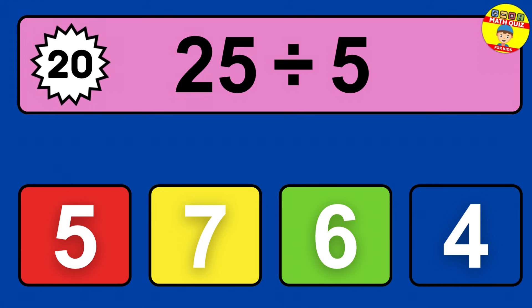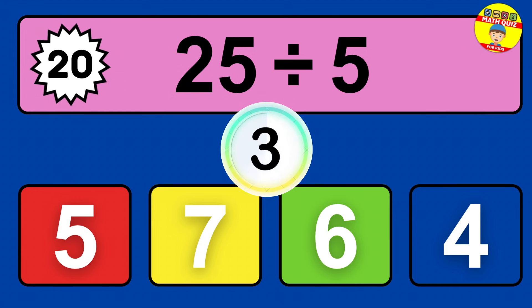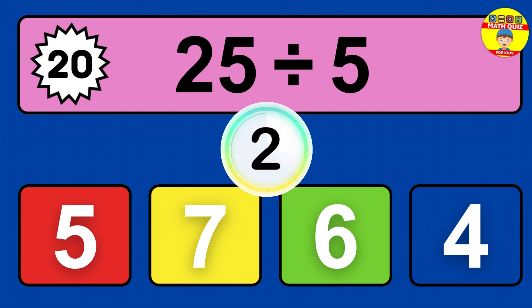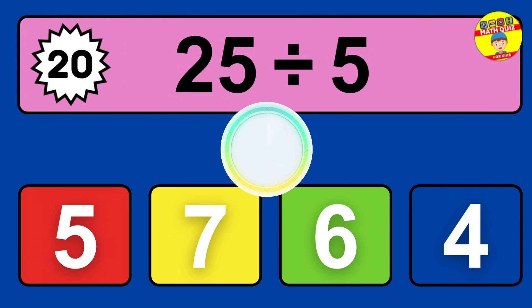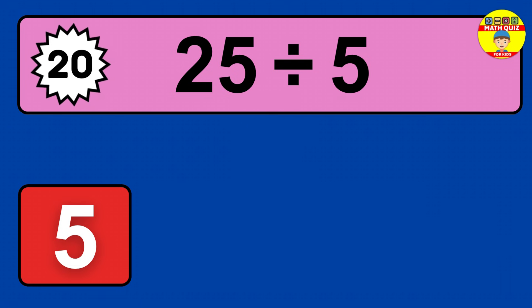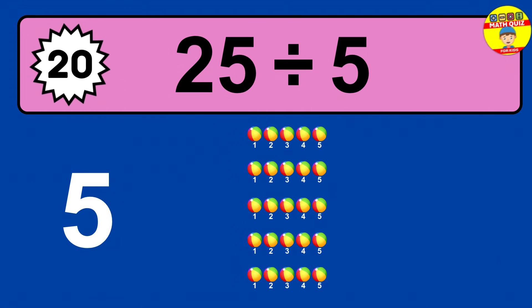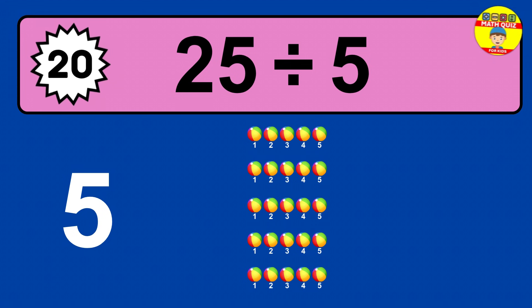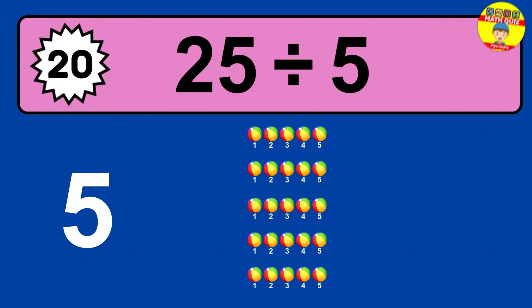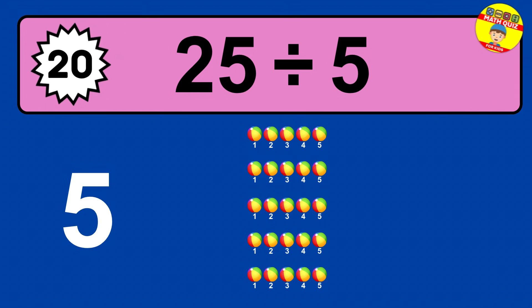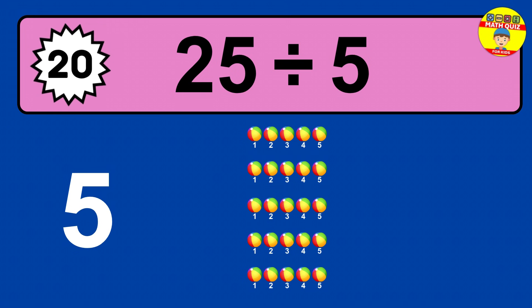25 divided by 5 — time to think. Let's go to the solution. Divide the number 25 by 5. Each group contains 5 units, so dividing 25 by 5 results in 5 equal groups. Thus, the result is 25 divided by 5 equals 5.